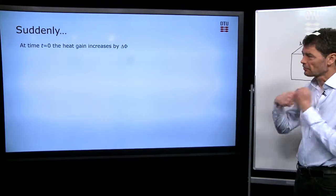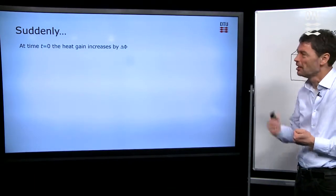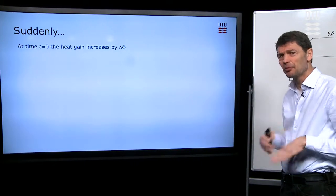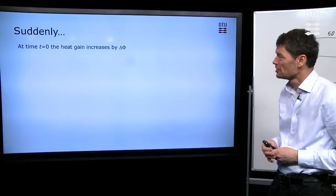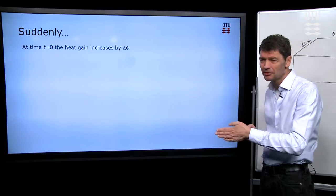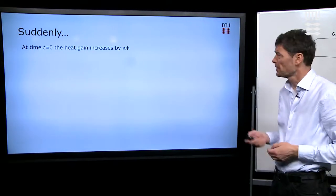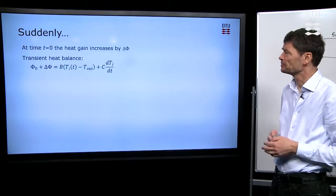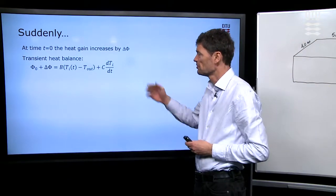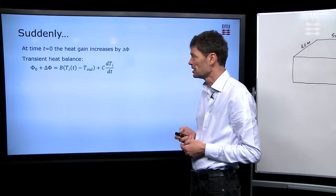That was initially in equilibrium, but the idea of making a transient is to see what happens if suddenly we have a change in the condition. So at time zero, suddenly the heat gain that we had in the room is increased by a certain level, delta phi. That means that if I write the equation from before, I should now write it a little bit differently.